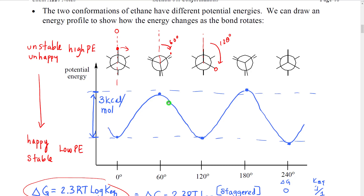One important thing about conformations is that they often don't have identical potential energies. So we can draw an energy profile, which correlates a particular structure with its potential energy. By drawing the structures in order as we rotate around a bond, we can see how potential energy changes during rotation. For example, this would be the staggered conformation of ethane, and using this hydrogen as a reference point we would put that hydrogen at zero degrees of rotation. If we then rotate that hydrogen 60 degrees, we would create an eclipsed conformation.